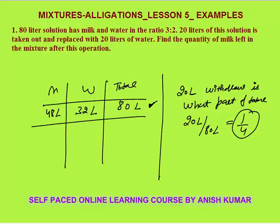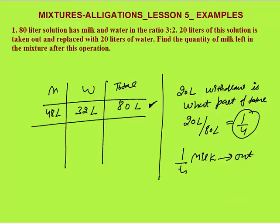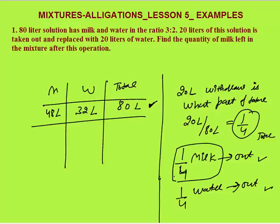When we withdraw one-fourth of total solution, whatever ingredients the solution has — in this case two ingredients, milk and water — one-fourth of milk will be out and one-fourth of water will be out. Whenever you withdraw one-fourth of total solution, one-fourth of all ingredients will be out. So one-fourth of milk will be out, meaning three-fourths of milk will be left.